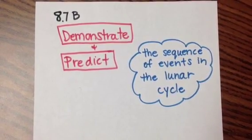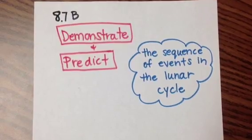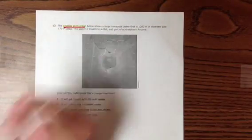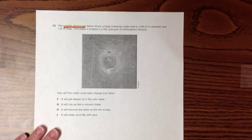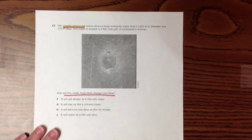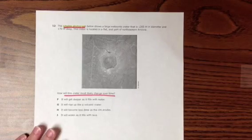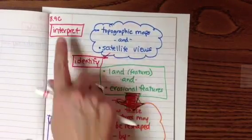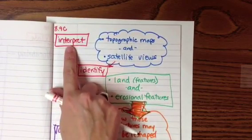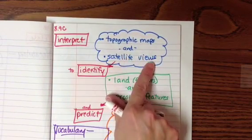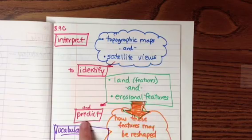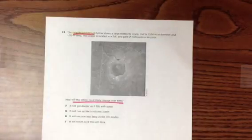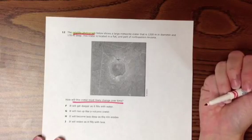In this example from 8th grade, students need to demonstrate and predict the sequence of events in the lunar cycle. This question asks students to look at a satellite photograph and tell how the crater will change over time. If we go back to our tech breakdown, we're going to see that students need to interpret a satellite image, identify the land features, and predict how it's going to be reshaped by weathering. And that is exactly what TEA did on this question.